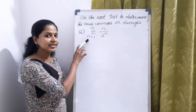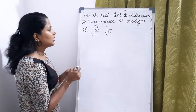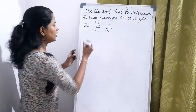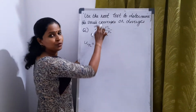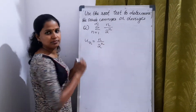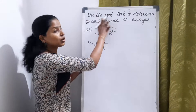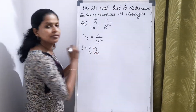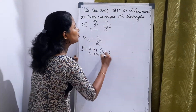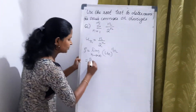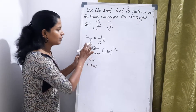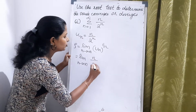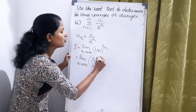Problem: Check whether the series converges or diverges. Sigma n equal to 1 to infinity of n divided by 2 raised to n. Here u_n is equal to n by 2 raised to n. In the root test, rho is equal to limit n tends to infinity of u_n raised to 1 by n, which is n by 2 raised to n, the whole raised to 1 by n.